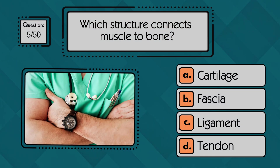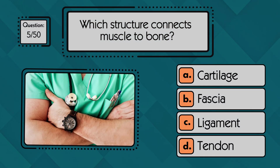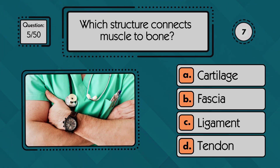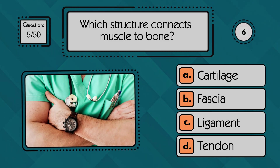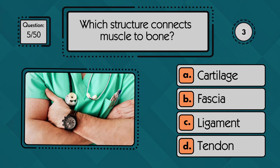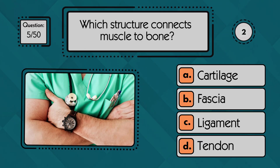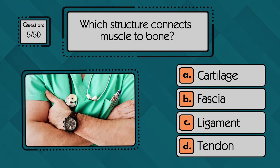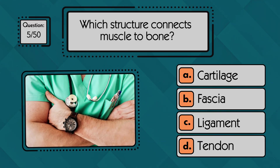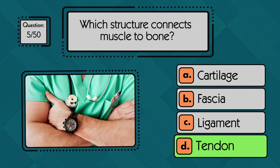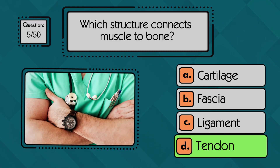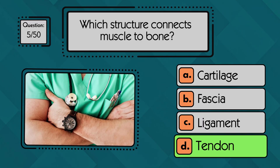Which structure connects muscle to bone? A muscle attaches to a bone through a tendon, which transfers the force of the muscle to create movement.